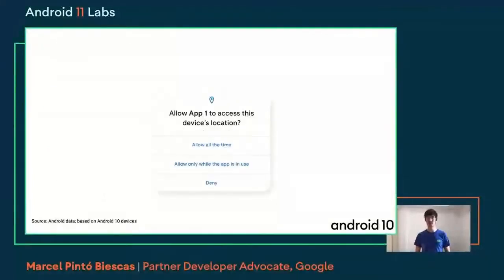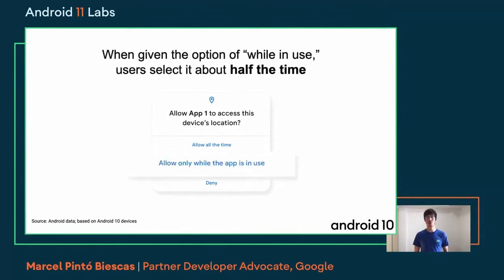One of the main changes in Android 10 was that we introduced the granular per-location permission. We have seen over half of the users selecting only 'while the app is in use.' Our data suggested that users understand 'while in use' and are intentional about that choice, providing us with a strong signal that users are choosing to share less information and data with apps.